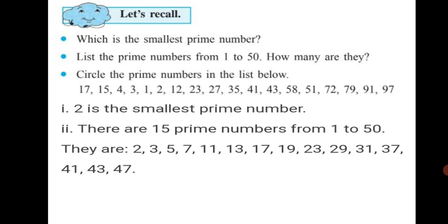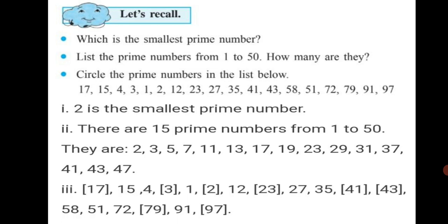The common factors will be only 1 and the number itself. Third question: circle the prime numbers in the list below. 17 is a prime number, so you can circle it or put it in a bracket. Next: 3, 2, 23, 41, 43, 79 and 97 — all these are prime numbers. Hence we will put them in a bracket or circle them. Prime numbers are not divisible by any other number besides 1 and itself.